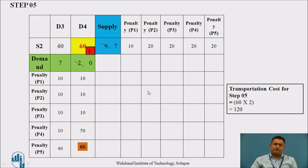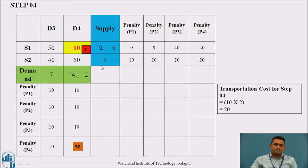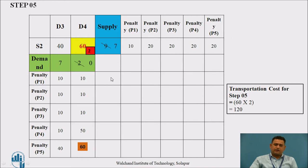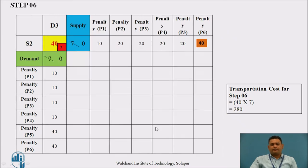Step 5: the supply from source S1 has been fully supplied, so there is a row reduction. In this step, we select the cell with cost 60. The transportation cost is 60 into 2, which is 120. In step 6, only one cell remains — cost 40. The demand is 7 and the available supply is also 7, so it is satisfied. The transportation cost for step 6 is 40 into 7, which is 280.